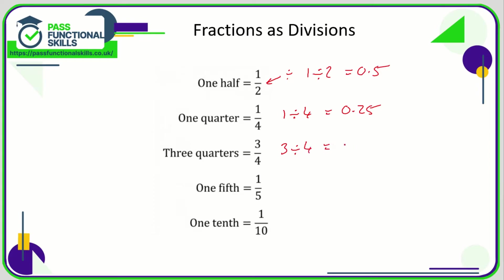Three quarters is three over four, which means three divided by four, and three divided by four is 0.75. One fifth — one over five — is one divided by five, and one divided by five is 0.2. One tenth is one over ten, which means one divided by ten, and one divided by ten is 0.1.